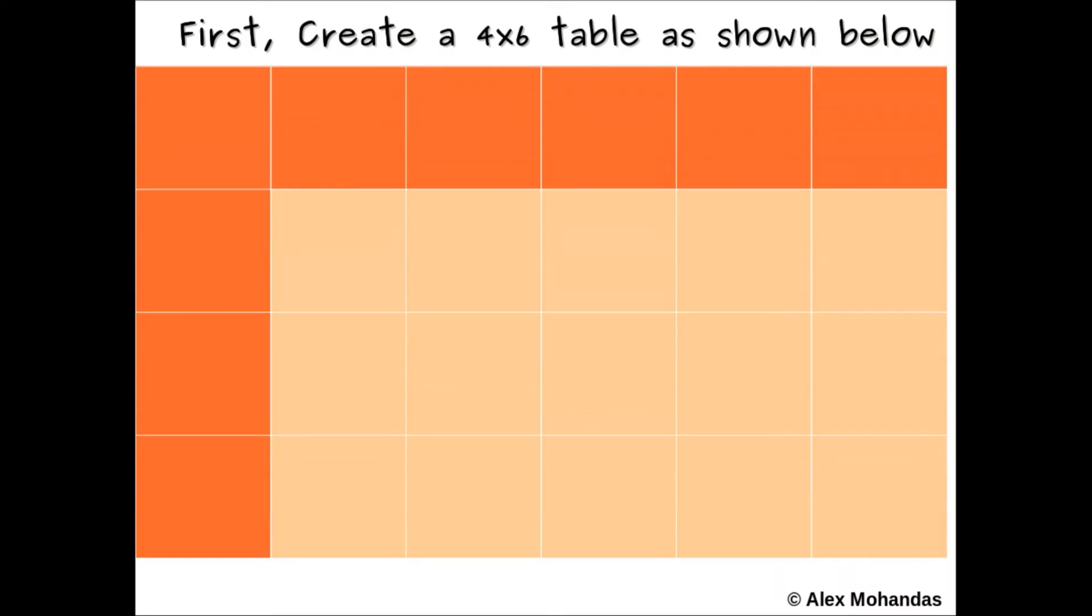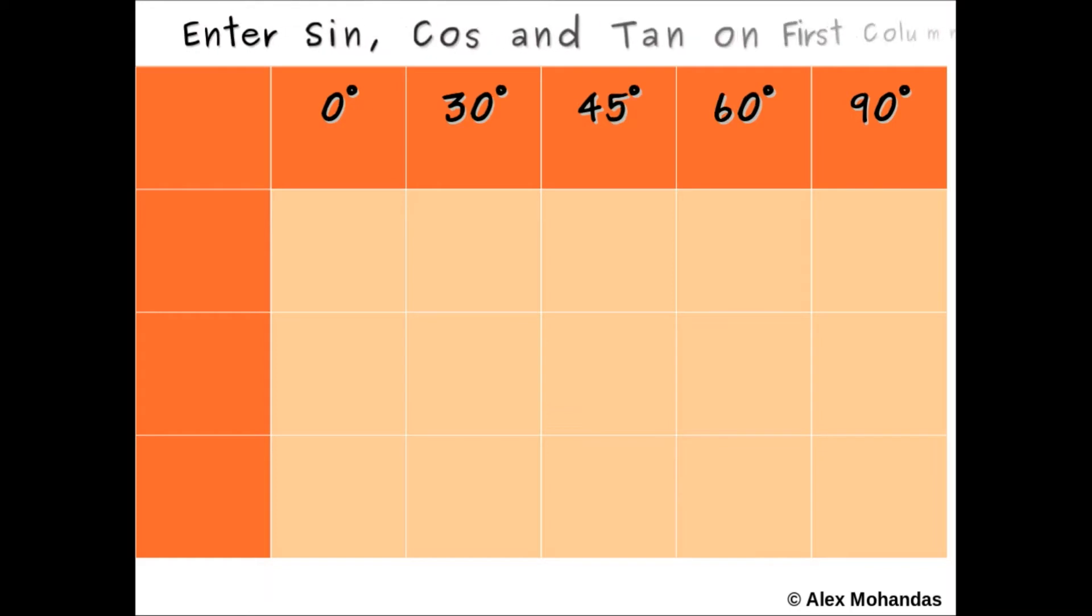First, make a 4 by 6 table like this. On the first row, enter the degrees: 0 degree, 30 degree, 45 degree, 60 degree, and 90 degree as shown here. On the leftmost column, enter sine, cos, and tan as shown.